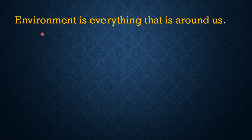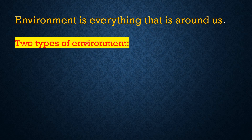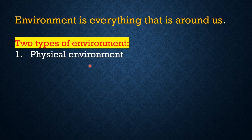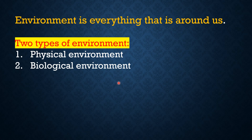Environment is everything that is around us. There are two types of environment: physical environment and biological environment.